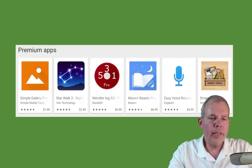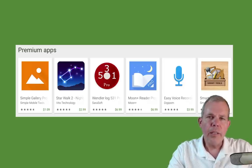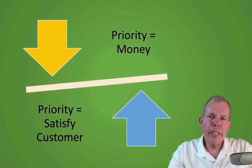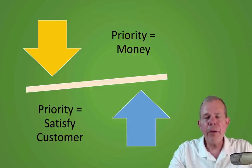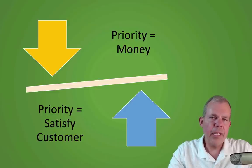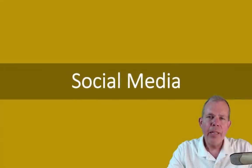Looking at premium apps in the Google Play Store, you can see what people are willing to pay for. It looks like there are no games here — we've got tools. Star Walk is a cool one where you can use your phone to track where things are in the sky. Sometimes premium apps exist because people will pay for a service without advertising. A good piece of advice: don't think about the money at all. Think about who your customer is and how you can satisfy them. If you can scratch an itch, meet a need, solve a problem, they'll eventually pay you — whether you charge them upfront or along the way.